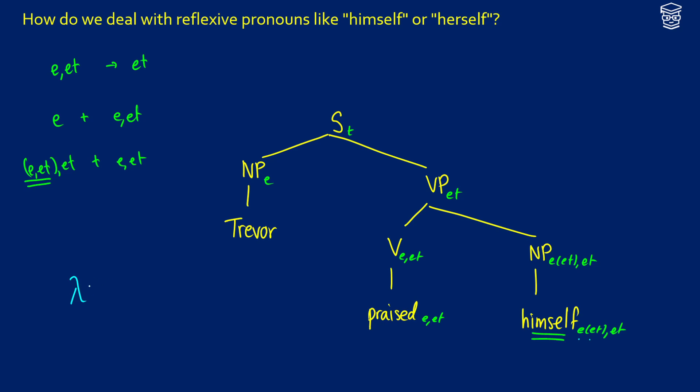So what I'm going to propose is that we label himself as such. We're going to make a function, let's call this lambda P, and then we're going to take an entity, lambda X, and what we're going to do is we're going to apply the predicate, and in order to get that reflexive meaning where the subject and the object are the same thing, we're going to apply X to it twice.